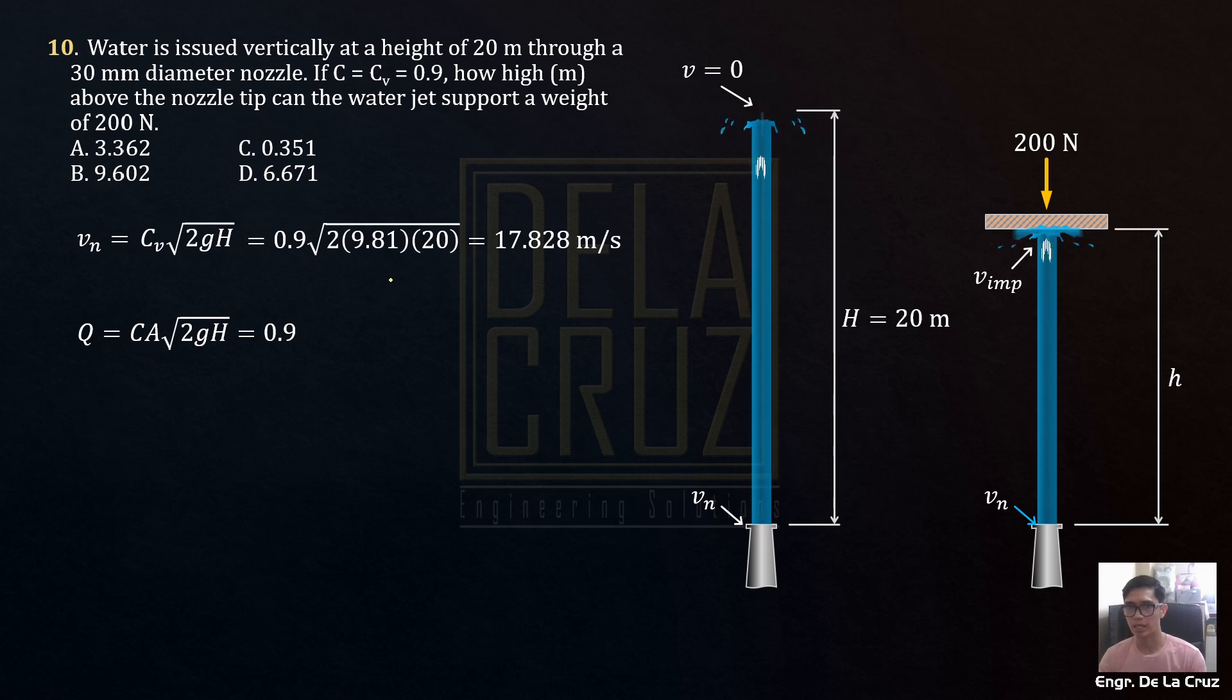Then multiply that one by the coefficient of discharge to become actual discharge. 0.9 for theoretical coefficient of discharge. The area, of course, the cross-sectional area at the nozzle given 30 mm diameter. Pi over 4 times 0.03 meters squared. Then square root of 2GH. The same as here. Of course, the same height. Let's get Q.